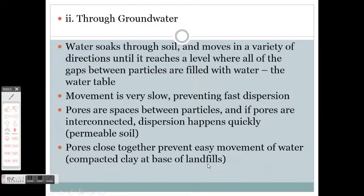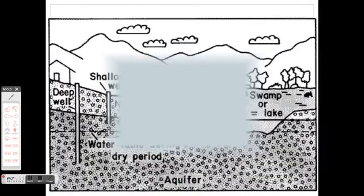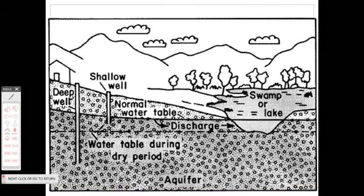If the pores are close together, they'll actually prevent easy movement of water. Back near the beginning of this unit we talked about sanitary landfills — often they'll use compacted clay at the base to help prevent water from leaving. If you've heard of people drilling a well for well water, it's often drilled down below the level of the water table. In this diagram we've got the water table level during a dry period, a normal water table a bit higher, and a process called discharge which brings water from the water table directly into a swamp or lake.